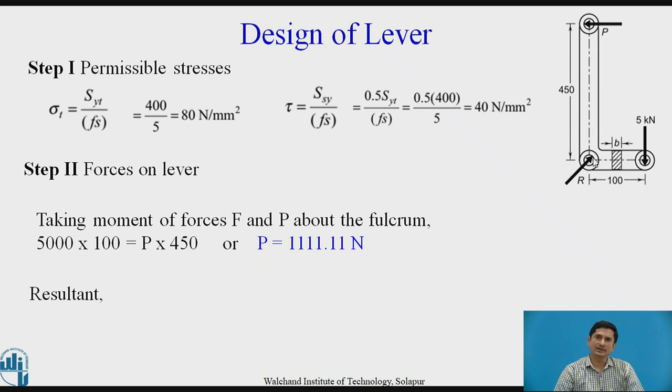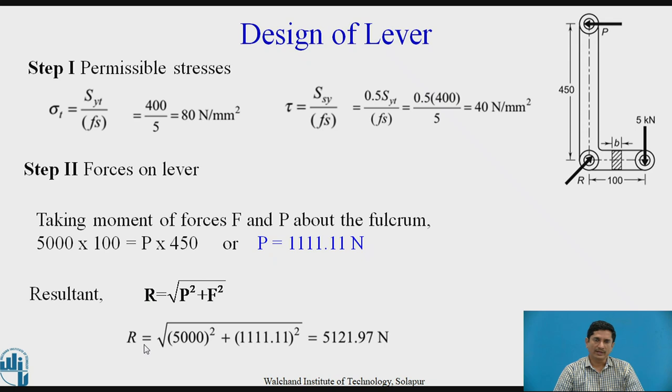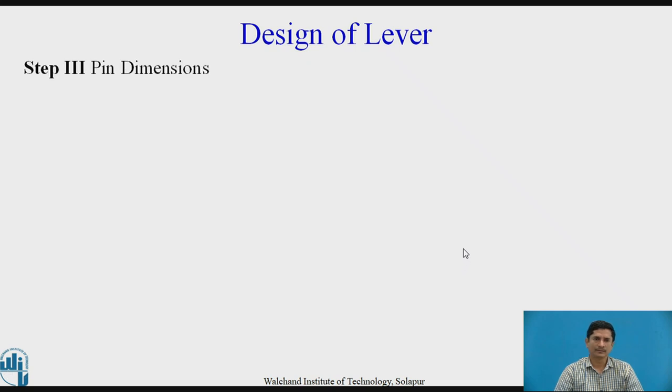Then we need to find out what is the resultant R, which is acting at the fulcrum point. R is given as R equals square root of P square plus F square. This is R, this is P and this is F. P is 5000 and F is 1111.11. We can calculate the value of R with the help of these two. We can calculate R using P square plus F square, square root of that. R equals square root of 5000 square plus 1111.11 square. We can get the resultant equals 5121.97. This is the critical step. We need to be very careful about calculating the value of resultant.